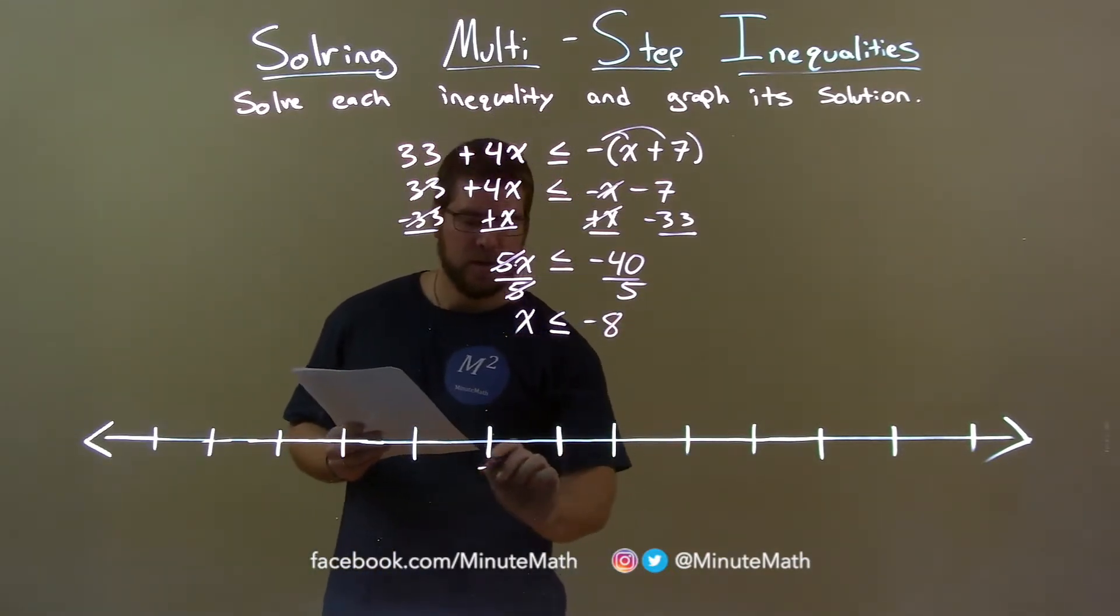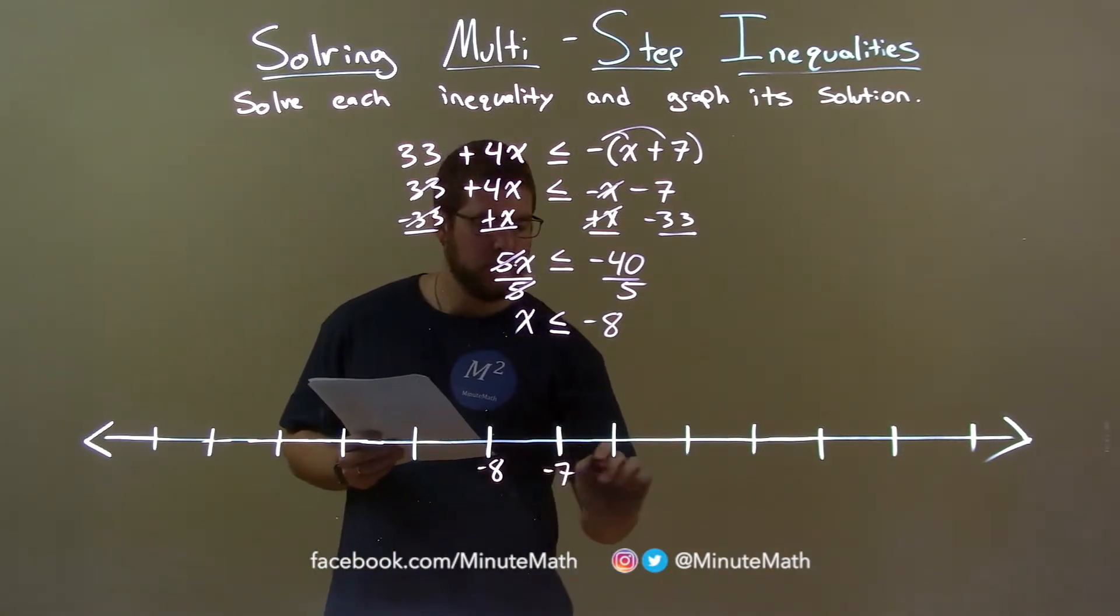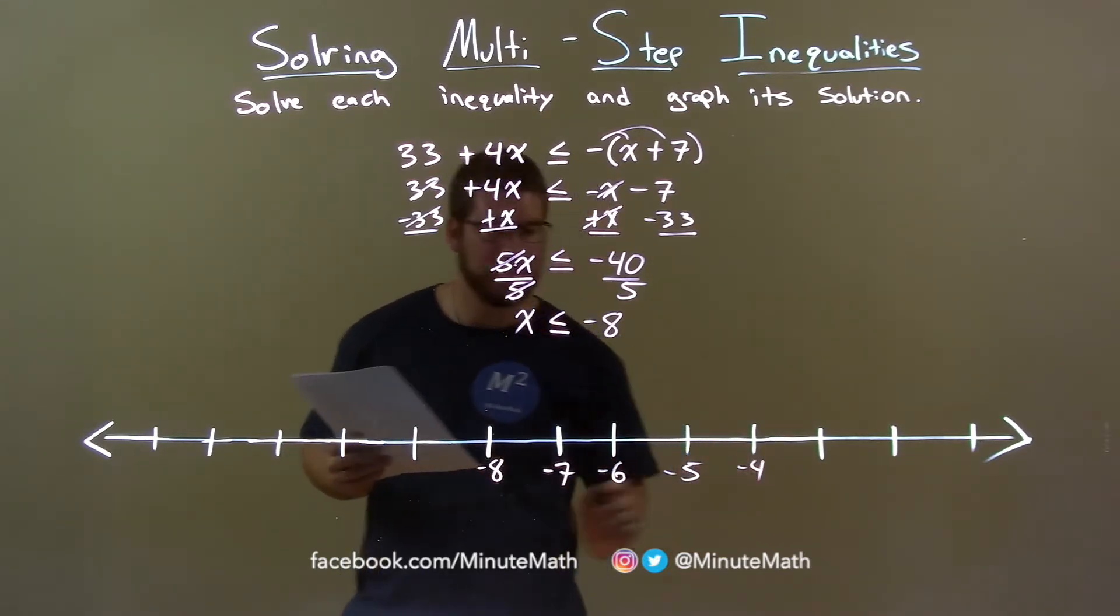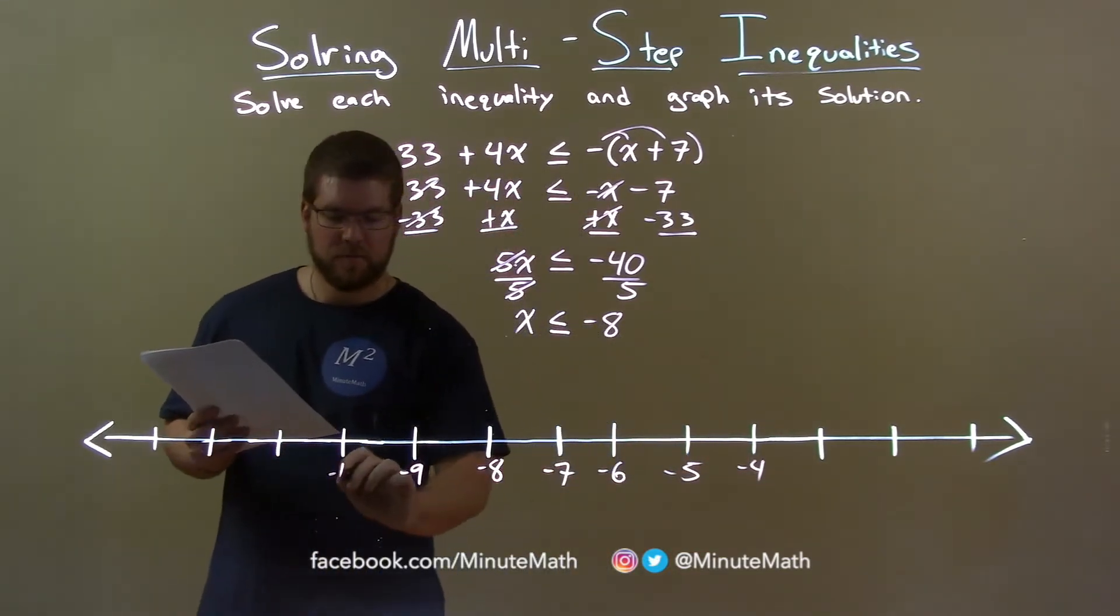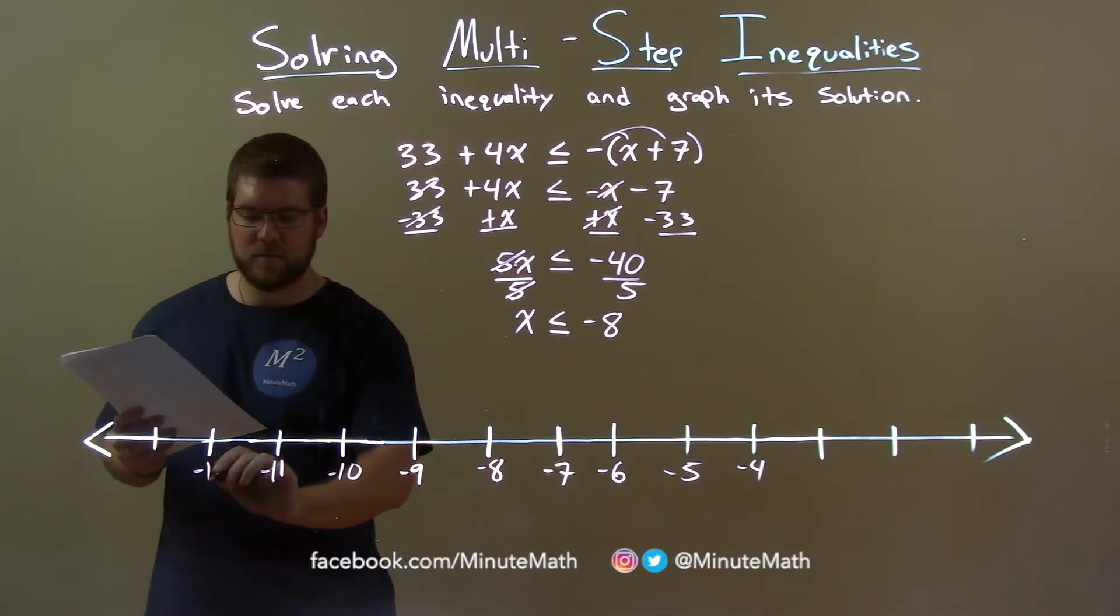So, let's graph it. Negative 8 here, negative 7, negative 6, negative 5, negative 4. And then negative 9, negative 10, negative 11, negative 12.